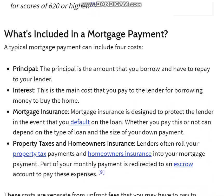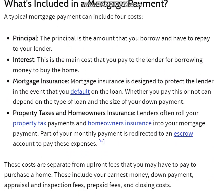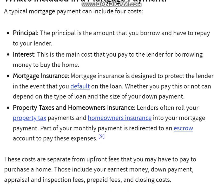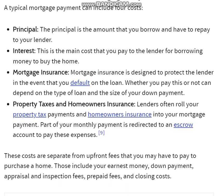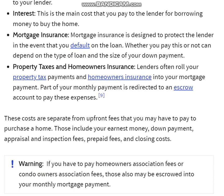What's included in a mortgage payment? A typical mortgage payment can include four costs. Principal: the principal is the amount that you borrow and have to repay your lender. Interest: this is the main cost that you pay to the lender for borrowing money to buy the home.